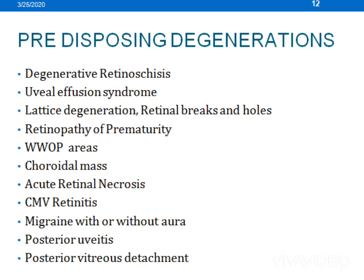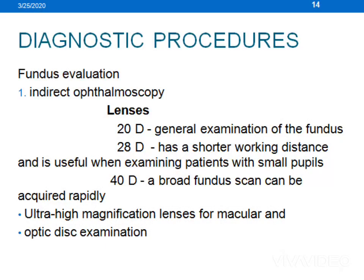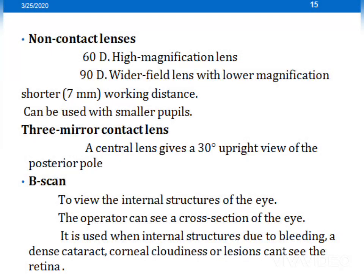The risk factors include RD in the other eye, aphakia, pseudophakia, high myopia, one-eyed patient, strong family history, and systemic diseases such as Marfan syndrome, Stickler syndrome, Ehlers-Danlos syndrome, aging, and long-standing diabetes and hypertension.